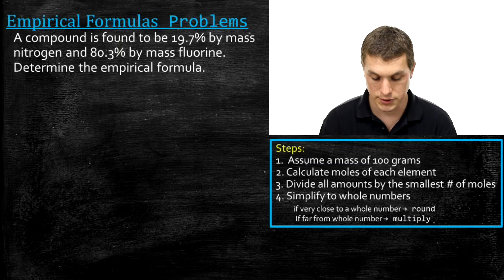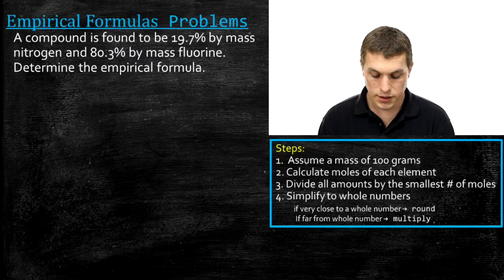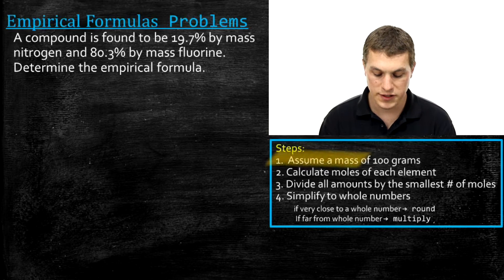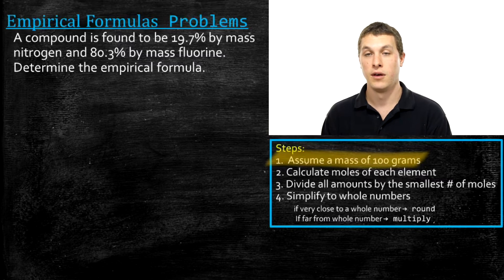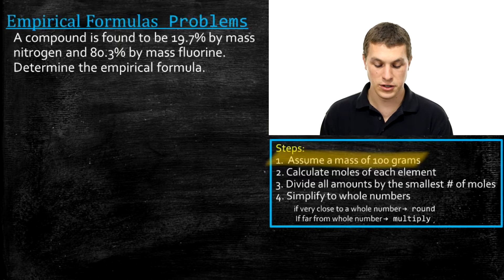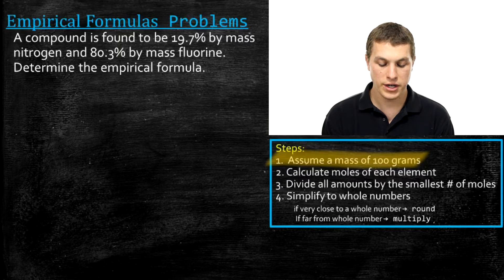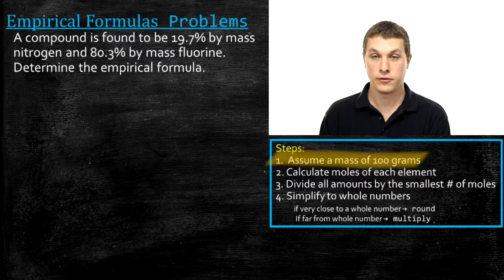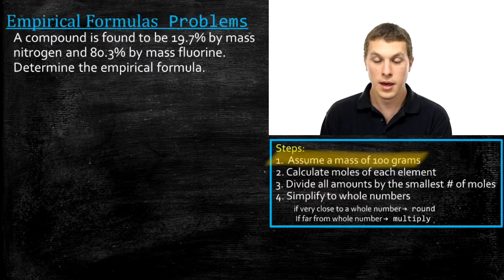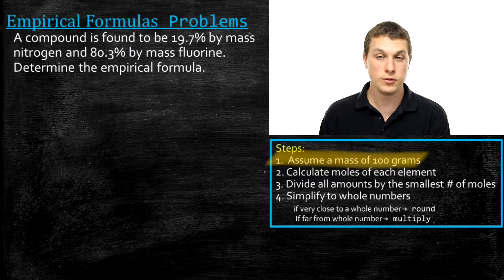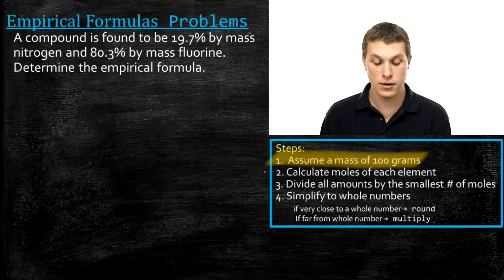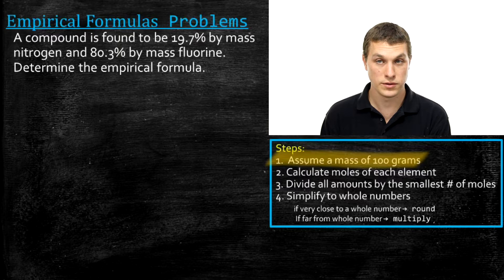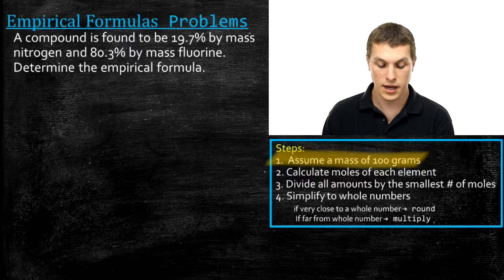I'm going to do two examples to show how to do these calculations. The first step is to assume your sample size is 100 grams. That just makes numbers easy to work with — you'd get the same empirical formula starting with a kilogram or a billion grams. So if we assume a 100-gram sample and 19.7% of that was nitrogen, we simply have 19.7 grams of nitrogen.